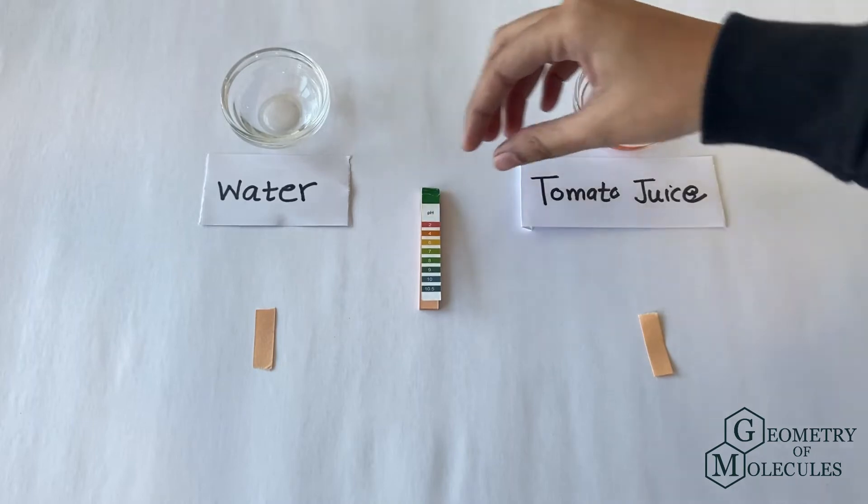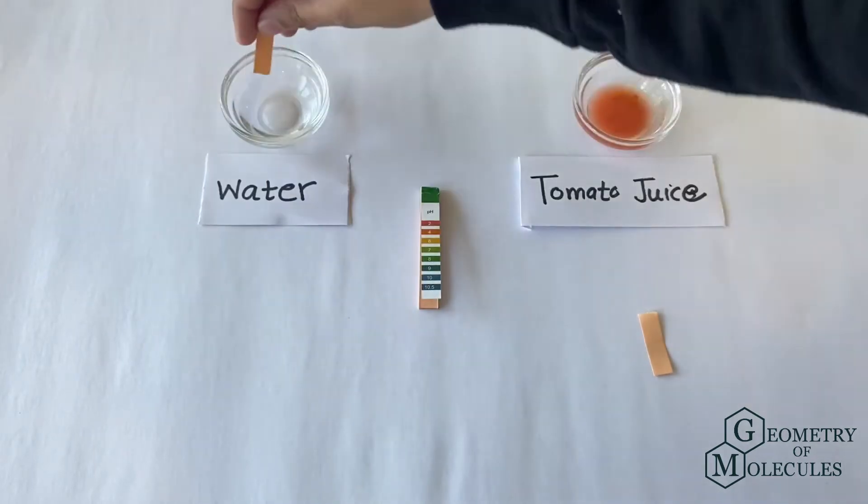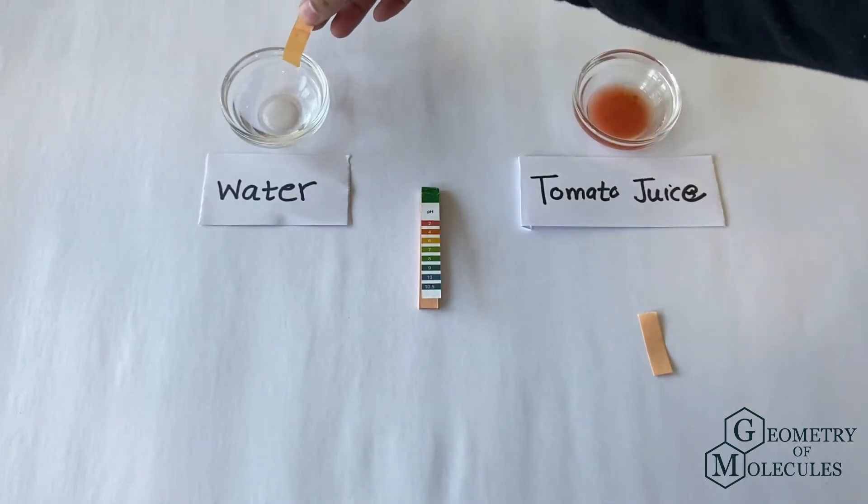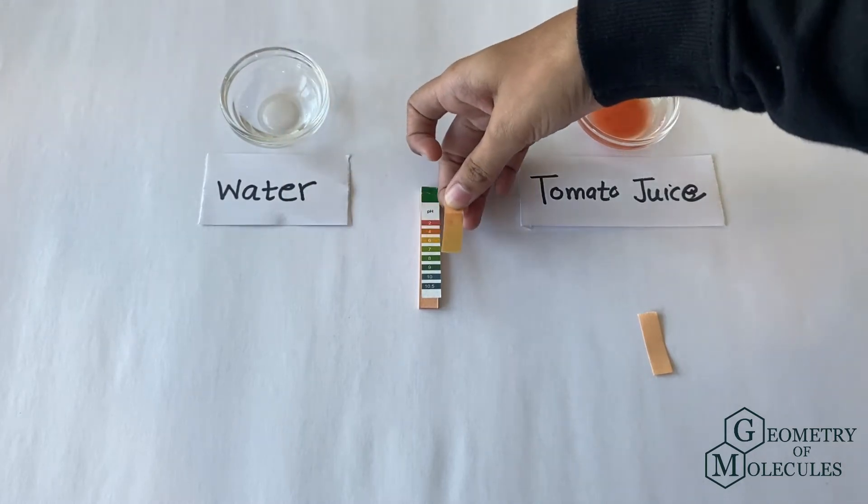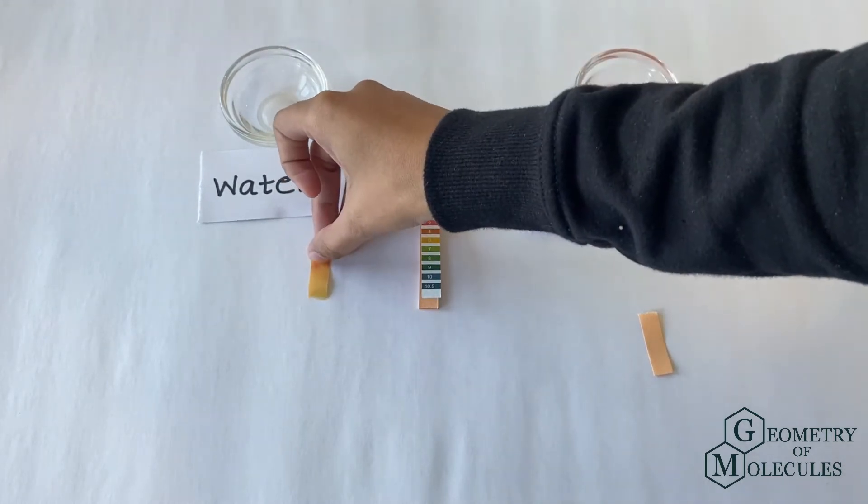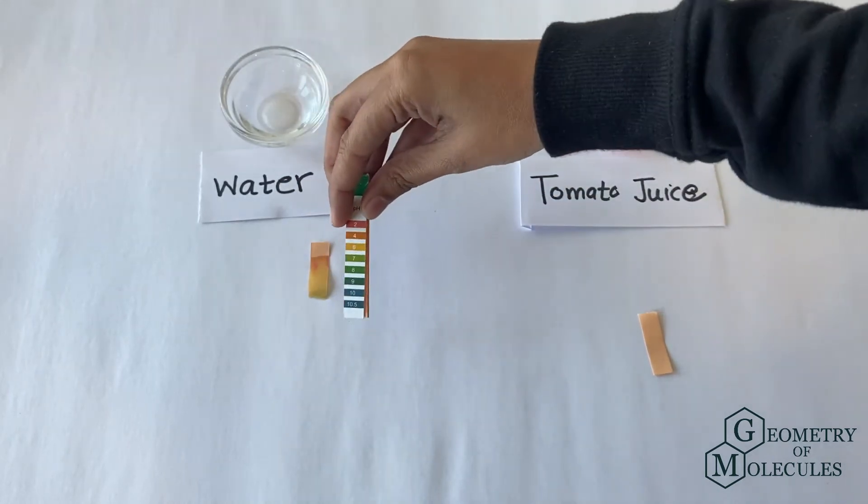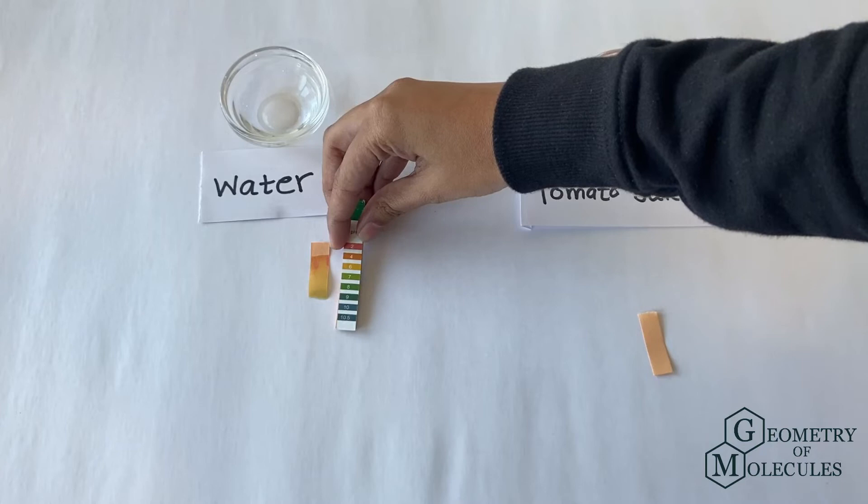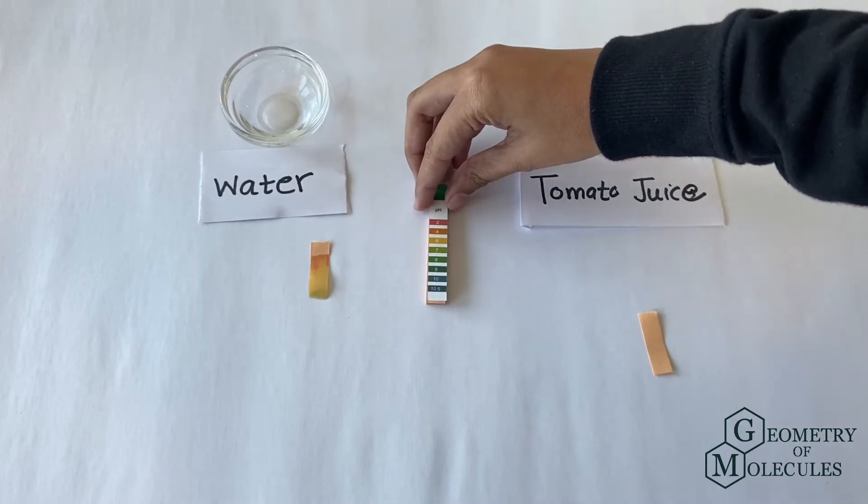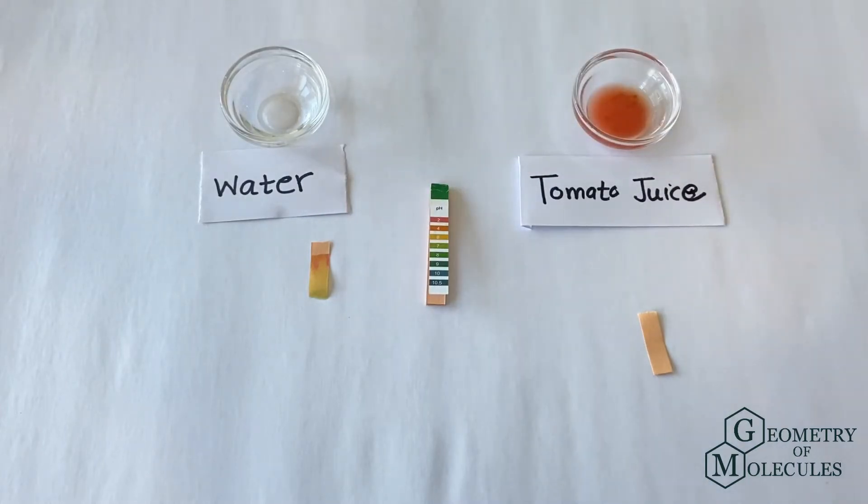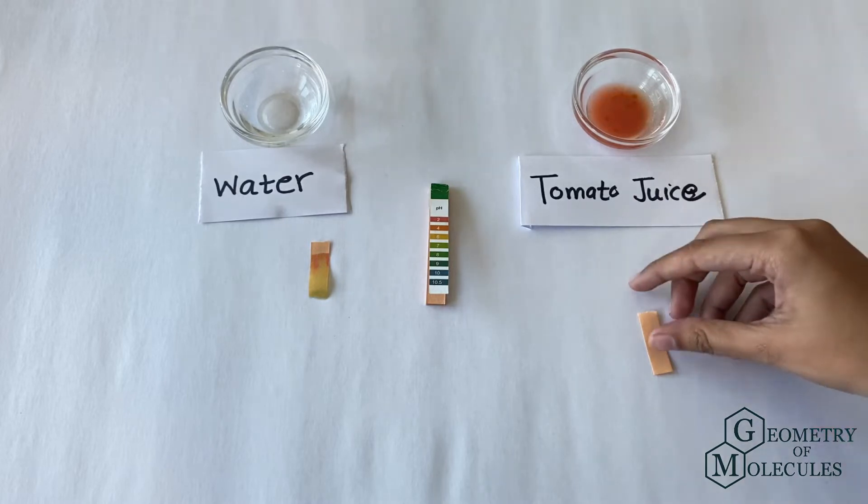Now let us test that by dipping a pH strip in water. We know that water is neutral, and as shown in this guide strip, it should change its color to light green. As you can see, the strip has instantly changed its color from orange to light green. Water has a pH of 7, which indicates its neutrality. So let us go ahead and dip the strip into tomato juice and see what happens.